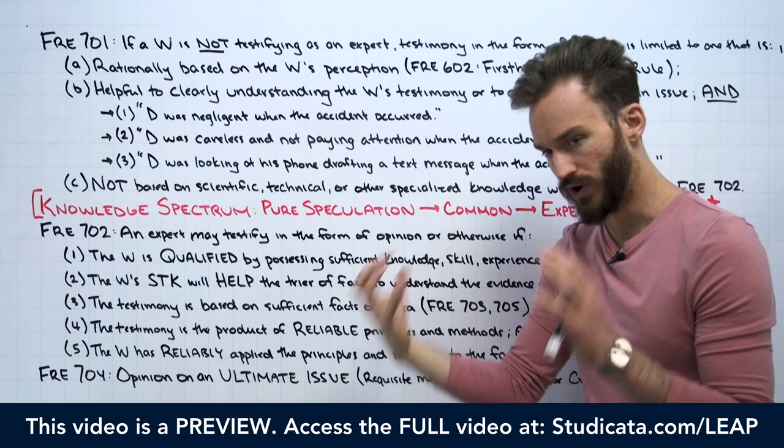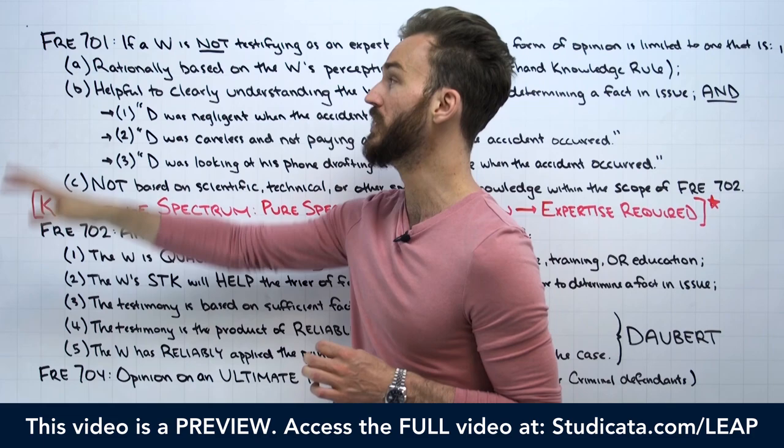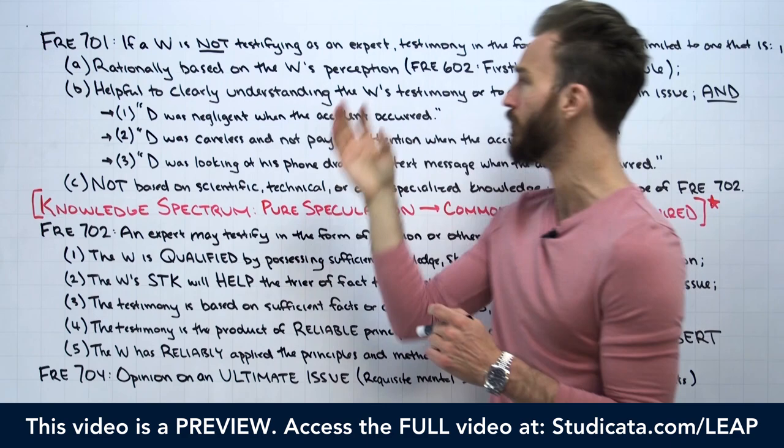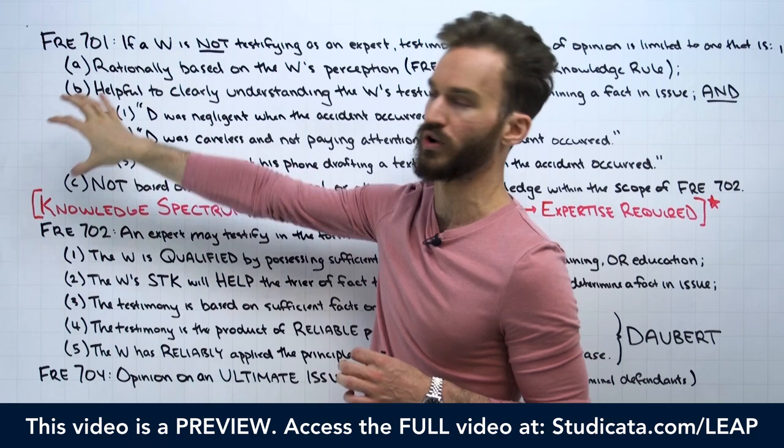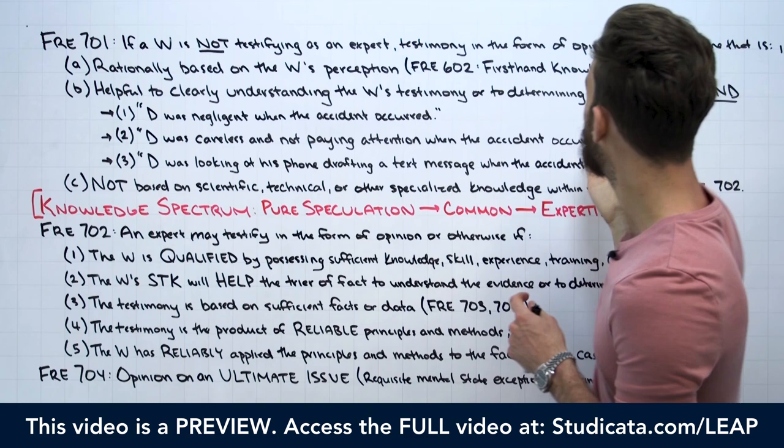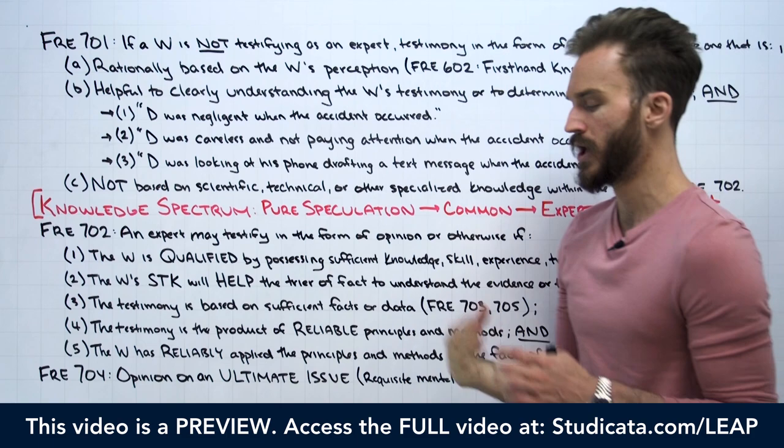Under Rule 701, if the opinion is based on common knowledge and doesn't require any specialized skill, technical experience, or other specialized knowledge, we know we're analyzing that opinion under 701. Testimony in the form of an opinion is limited to one that meets these three requirements, which we can break down element by element. Number one: the opinion has to be rationally based on the witness's perception.